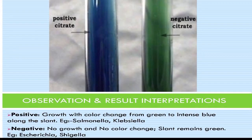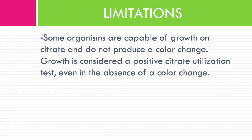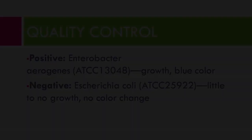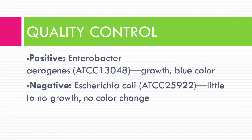Result interpretation: citrate positive — growth with color change from green to intense blue along the slant; examples are Salmonella and Klebsiella. Citrate negative — no growth or no color change, slant remains green; examples are E. coli and Shigella. Limitation: some organisms capable of growth on citrate do not produce a color change; growth alone is considered a positive citrate utilization test even in the absence of color change. Quality control: positive — Enterobacter aerogenes; negative — Escherichia coli.